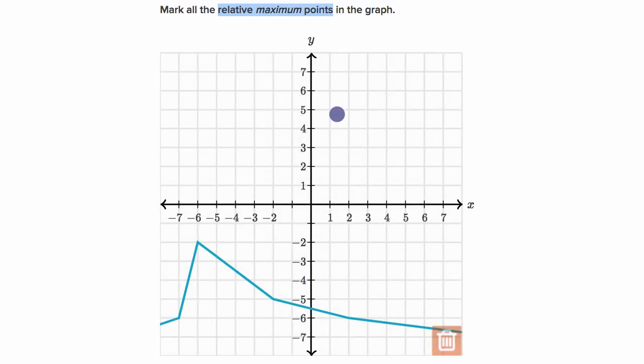And just as a review, a relative maximum point is a point of the graph where the values of the graph around it are going to be less than or equal to the value of the graph at that point.